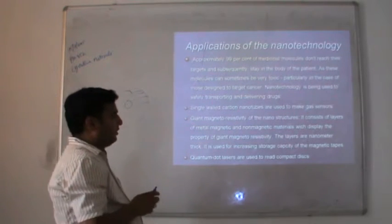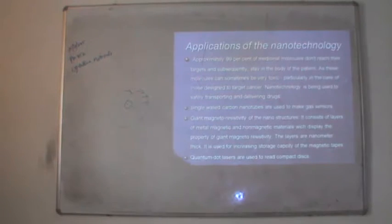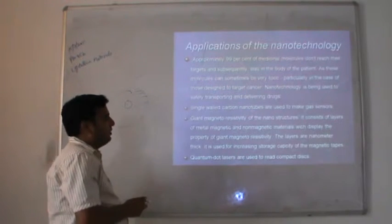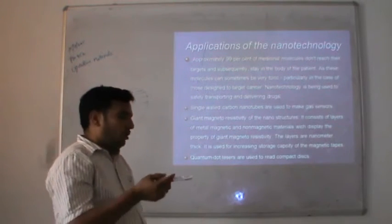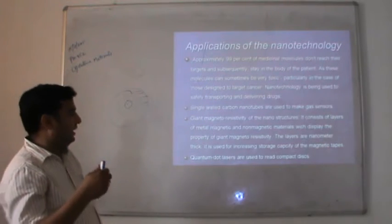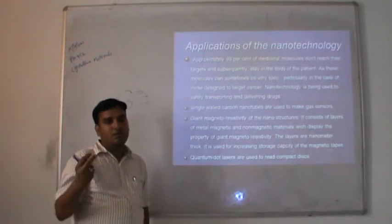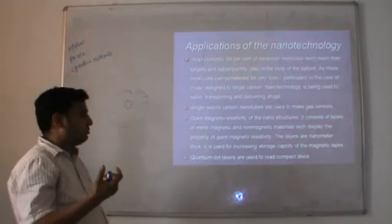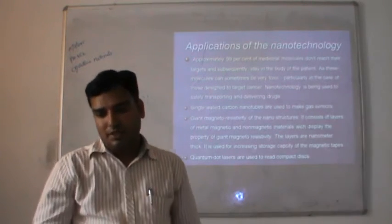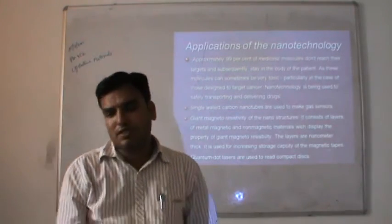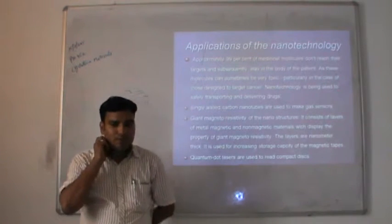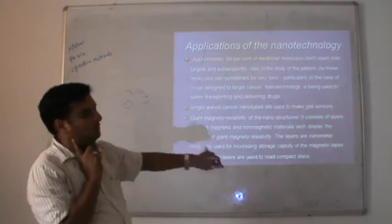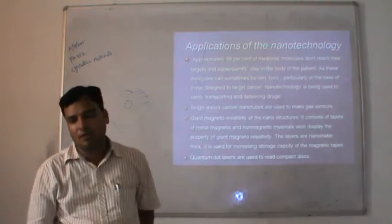Giant magnetoresistance of nanostructures consists of layers of metal — magnetic and non-magnetic materials — which display the property of giant magnetoresistance. It is the combination of conducting and non-conducting, or magnetic and non-magnetic, materials which produce giant magnetoresistance and improve the storage property of the material. Additionally, quantum dot lasers are used to read complexes, and photoelectric films convert light into electricity. We will discuss these applications in detail later — this is just an introduction to the applications of nanotechnology.